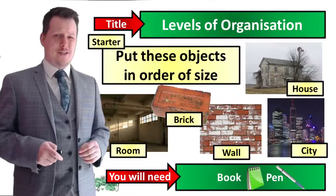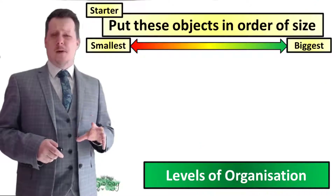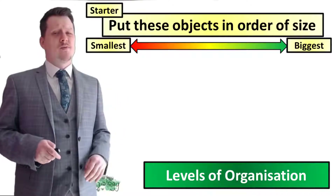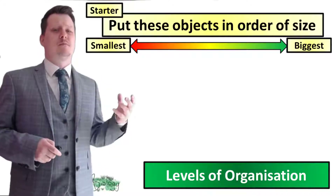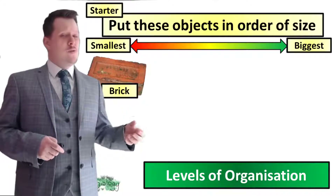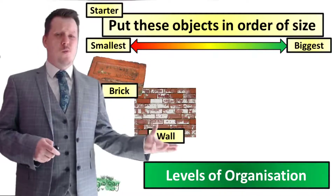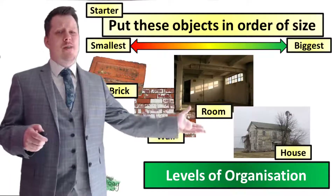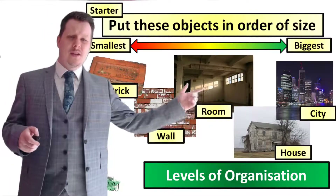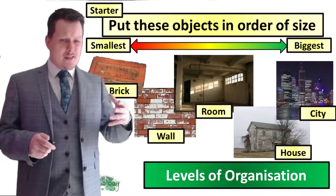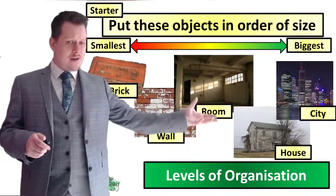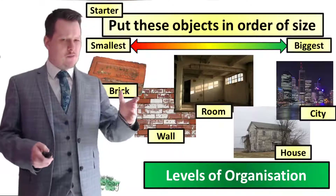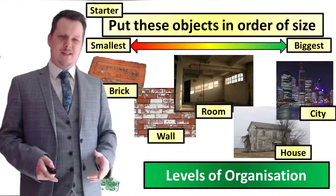OK, are we all finished? So putting these things in order of size, starting with the smallest, is the brick. We then have the wall, and then the room, and then a house, and then a city. This is the hierarchy of organisation of a city from smallest to biggest.